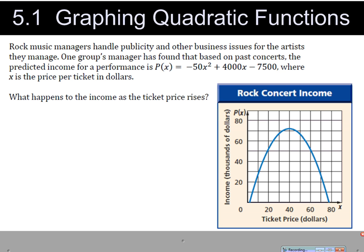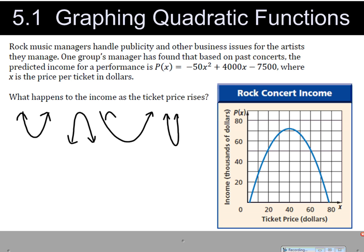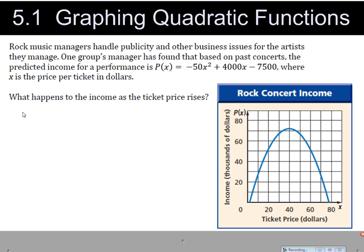This is 5.1 Quadratic Functions. A quadratic function is one that looks some variation like this — it can be flipped over, it can be really wide, it can be really skinny. It is some variation of that shape.